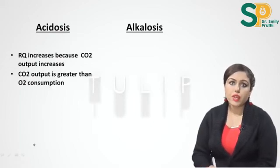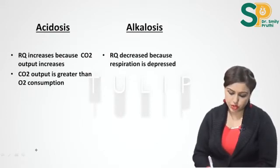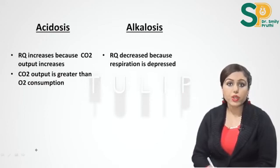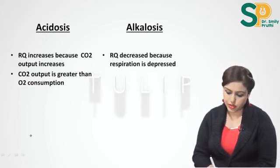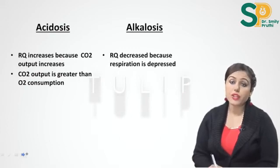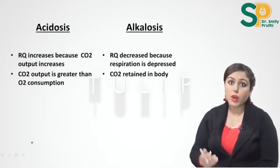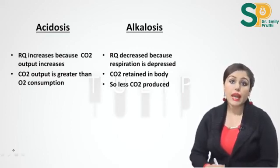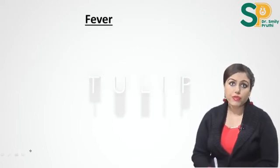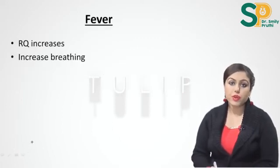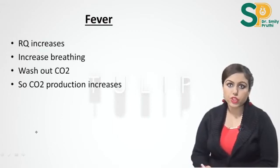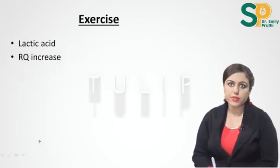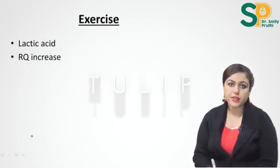In acidosis, RQ increases because carbon dioxide output increases — carbon dioxide output is greater than oxygen consumption. In alkalosis, RQ is decreased because respiration is depressed, so carbon dioxide is retained in the body and less carbon dioxide is produced. In fever, RQ increases because there is increased breathing, so carbon dioxide production increases.